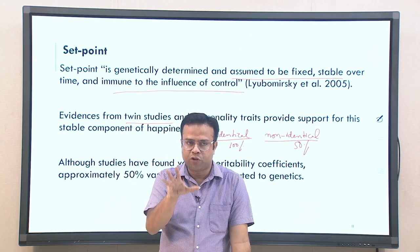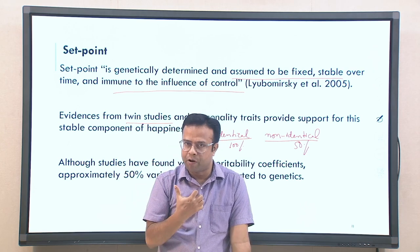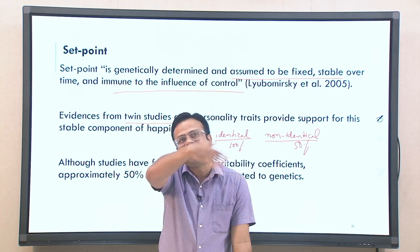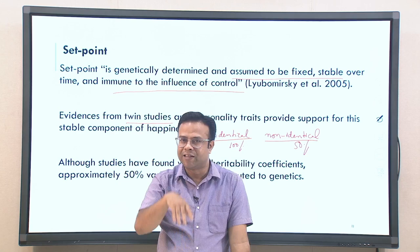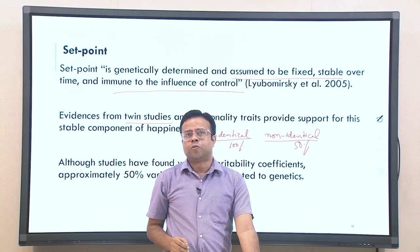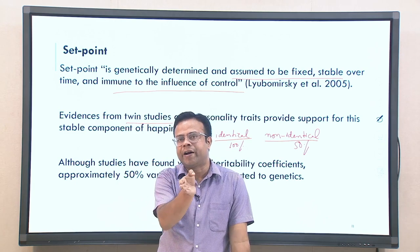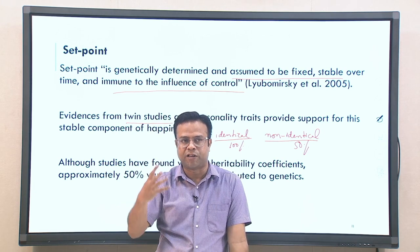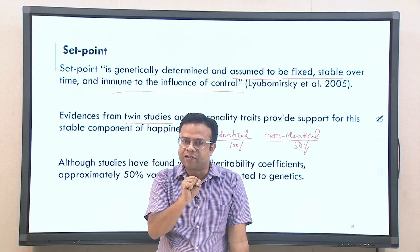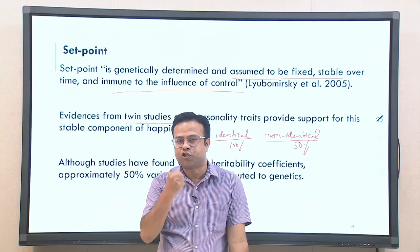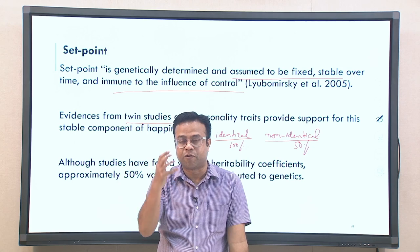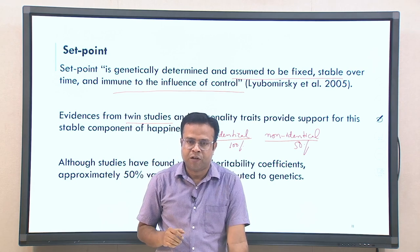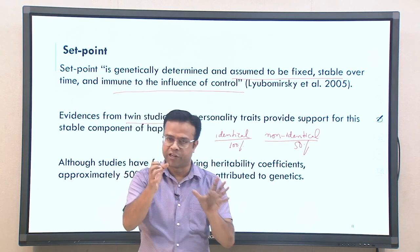The problem with twin studies is that if both twins remain in the same environment, similarities could be due to environment rather than genes. So many studies focused on identical twins separated after birth and raised in different circumstances or families. These studies found that even identical twins reared in different environments and families showed dramatically similar traits, personality characteristics, and emotional experiences — indicating that genes contribute very strongly to emotional experiences and personality.